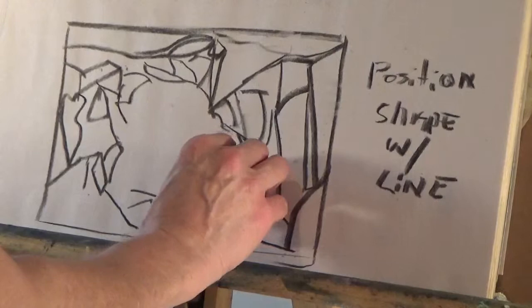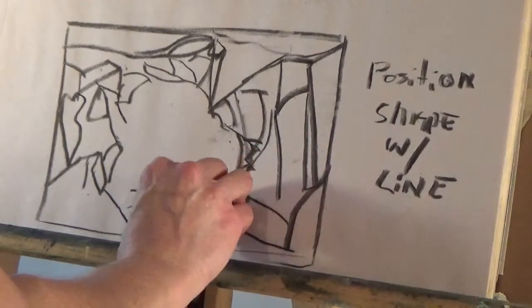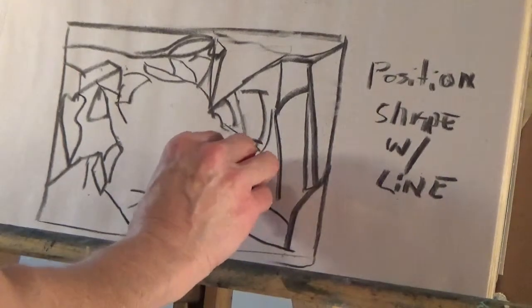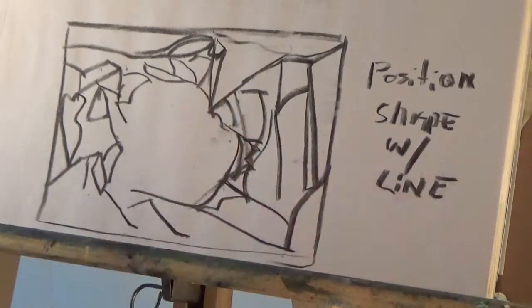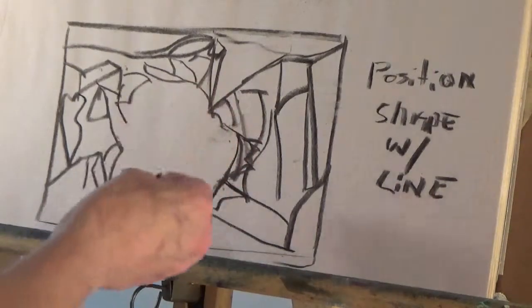So make certain that you have mapped out the territory in both positive and negative shapes. This is what you're doing now. It's a very interesting abstract right now. Very.